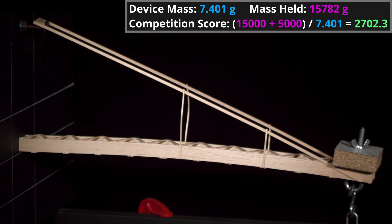I have the high speed camera recording at just over 3500 frames per second to try and capture what is going on with these violent failures. Since this Bumi held over 15kg it achieved the bonus mass held so its competition score is 15,000 plus 5,000 divided by the mass of 7.401 grams or 2702.3.